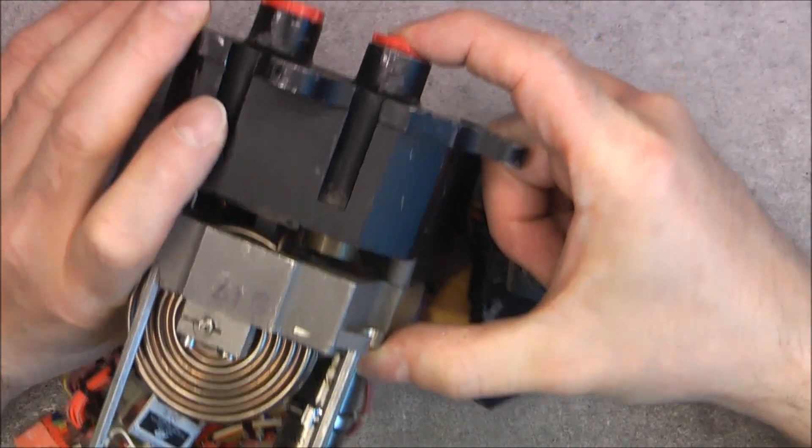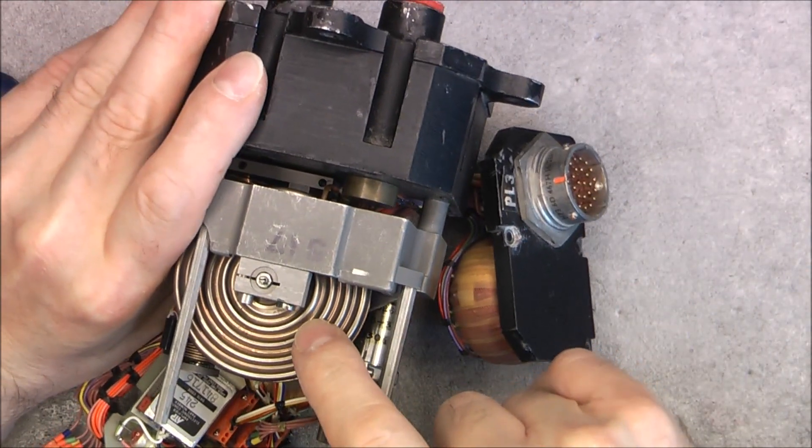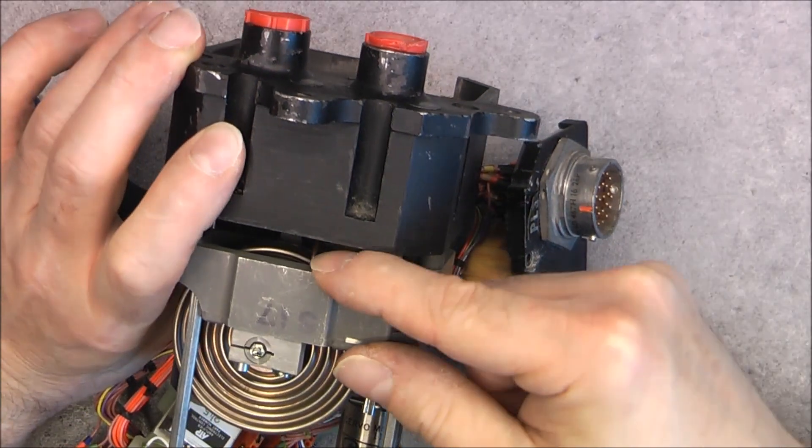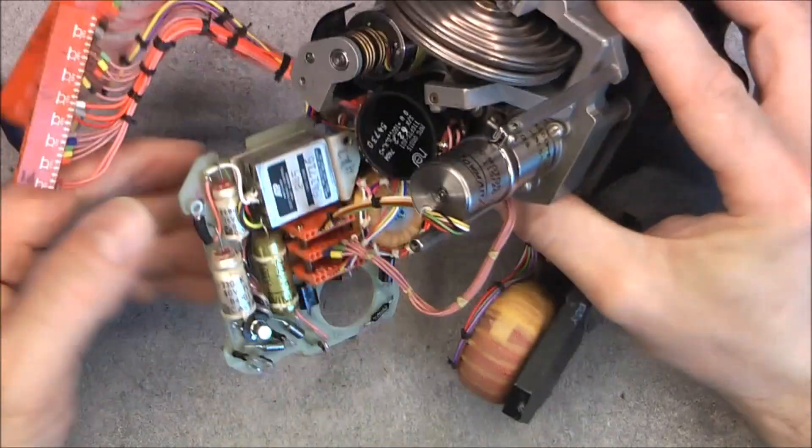So obviously, one of the two air inputs goes inside the aneroid capsules with a little copper pipe you can see here. And the other one is just the pressure case.